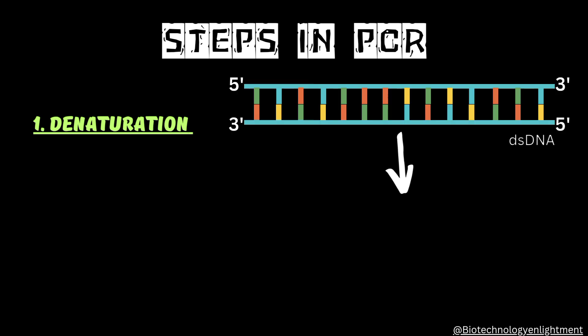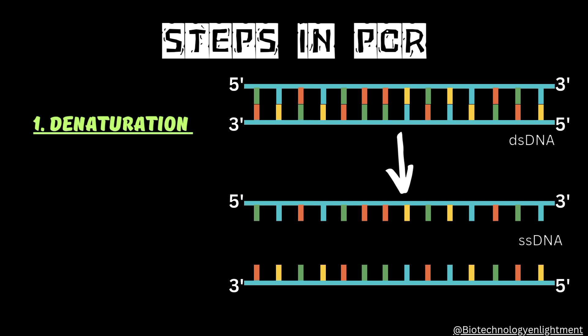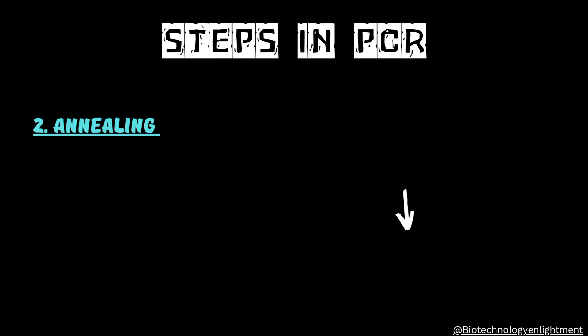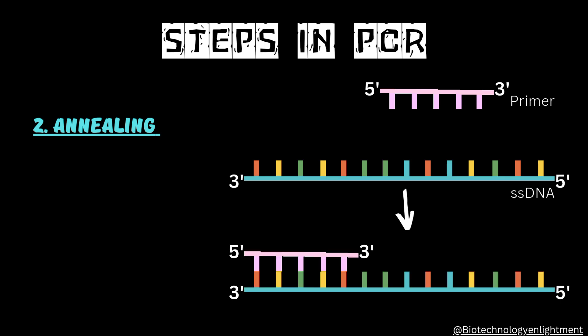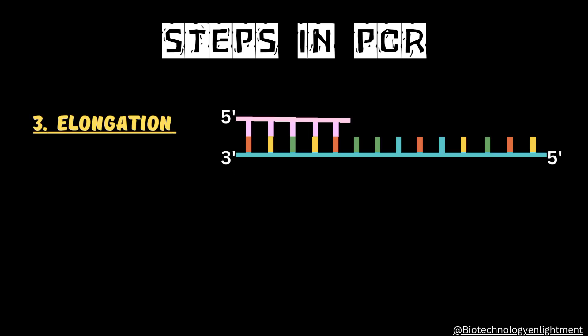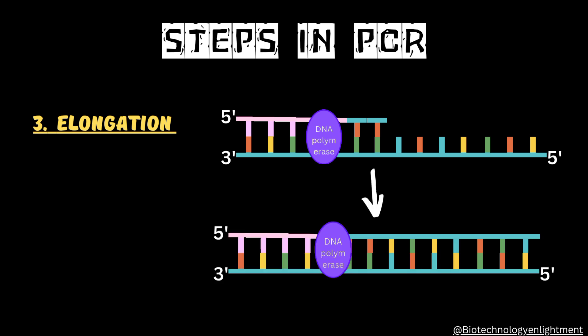There are basically 3 steps of PCR. The first step is denaturation, in which the double-stranded DNA molecule will be broken down into single-stranded DNA strands. The second step is annealing, in which the primer attaches to the single-stranded DNA molecule. The third step is elongation, in which new strand elongation occurs by adding dNTPs to the 3-prime end of the primer by the help of DNA polymerase enzyme.